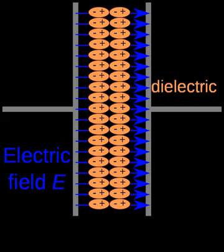Commercially manufactured capacitors typically use a solid dielectric material with high permittivity as the intervening medium between the stored positive and negative charges. This material is often referred to in technical contexts as the capacitor dielectric. The most obvious advantage to using such a dielectric material is that it prevents the conducting plates, on which the charges are stored, from coming into direct electrical contact. More significantly, however, a high permittivity allows a greater stored charge at a given voltage. This can be seen by treating the case of a linear dielectric with permittivity epsilon and thickness d between two conducting plates.